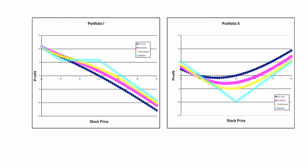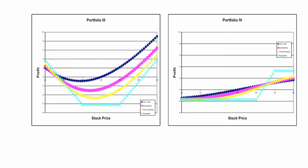For Portfolio 3, looking at the payoff at maturity, you have a declining line for low prices — that's short put — and then a flat line, which typically means no payoff from any of the options. Then from a later point you have an increasing payoff for high prices, which is long call.